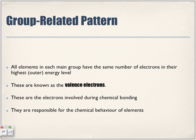Now, group related pattern. All elements in each main group have the same number of electrons in their highest energy level, their outer. And these, as we said, the valence electrons. These are the electrons involved during chemical bonding. Because remember, any energy level that is already full will not try to react with anything else. It's the electrons that are on the outermost energy level that actually are involved, because those are the ones that are closest to reacting with another atom that comes within its vicinity. So they're responsible for the chemical behavior of the elements.